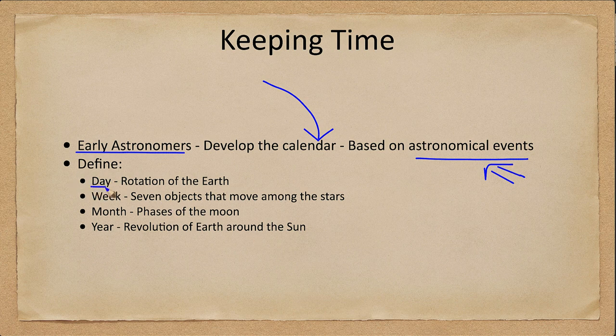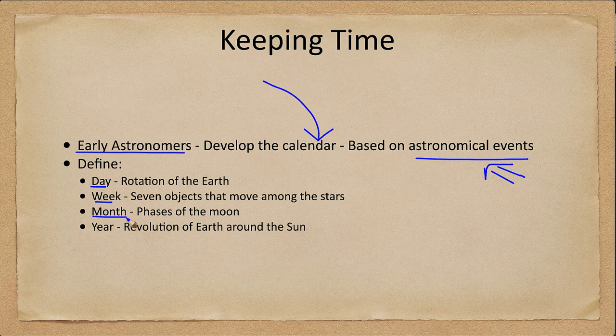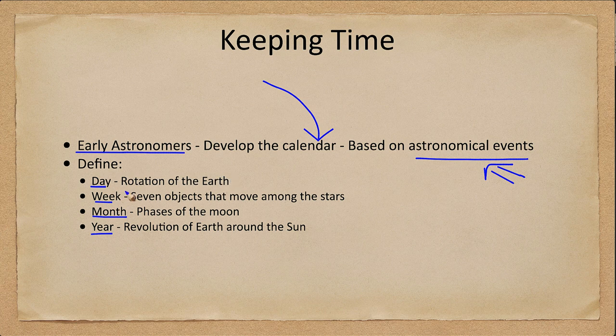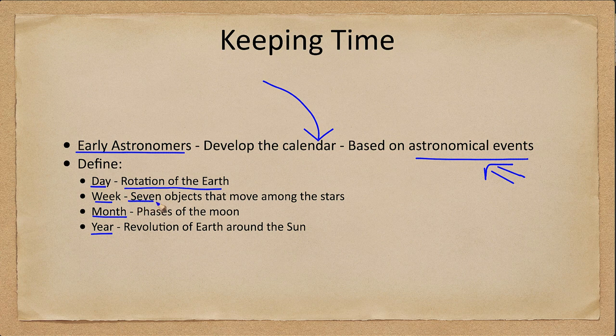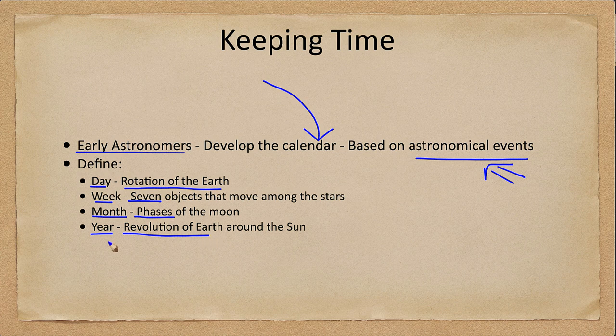So what do we mean there? Well, let's look at the day, the week, the month and the year which are how we tend to measure time. So our day is the rotation of the earth. Why is our week seven days? Well there were seven objects known to the ancients that moved among the stars. The month was about the cycle of phases of the moon and the year was the revolution of earth around the Sun. So all of these then put together give us our different measurements of time that we use today.